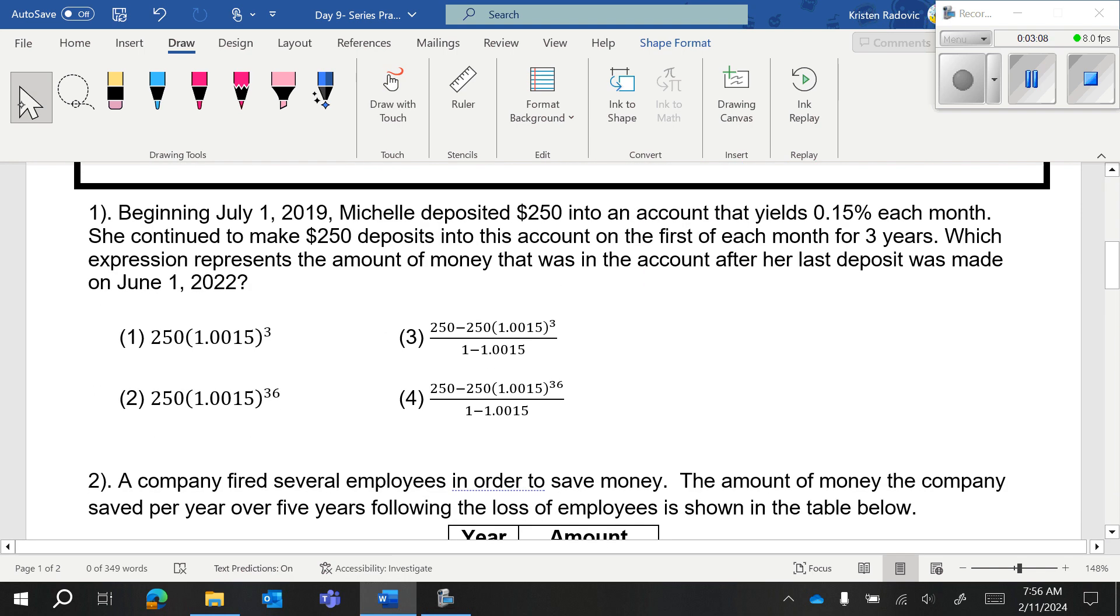We have beginning July 1st, 2019, Michelle deposited $250 into an account that yields 0.15% each month. She continued to make deposits into this account on the 1st of each month for 3 years, which expression represents the amount of money in the account after her last deposit was made.